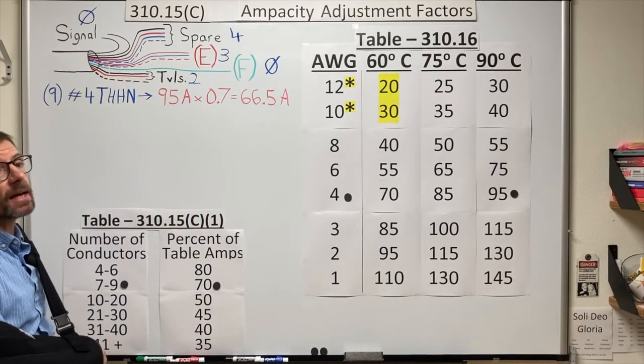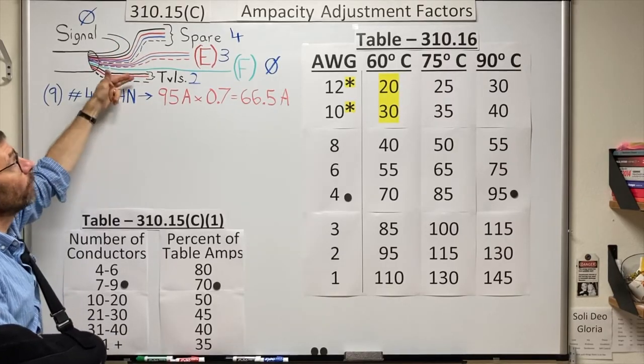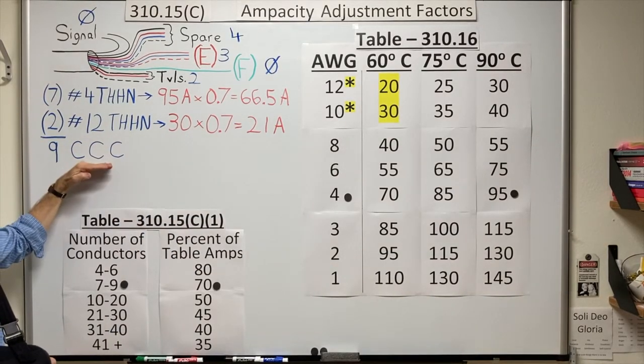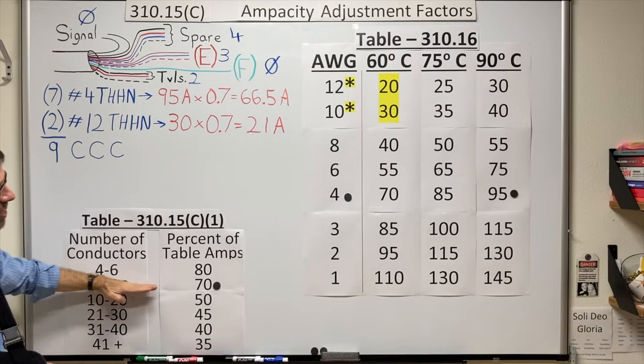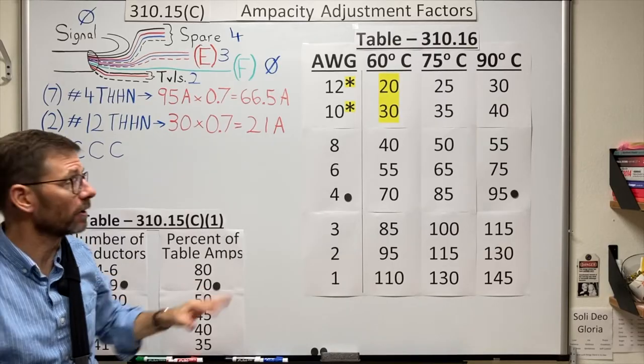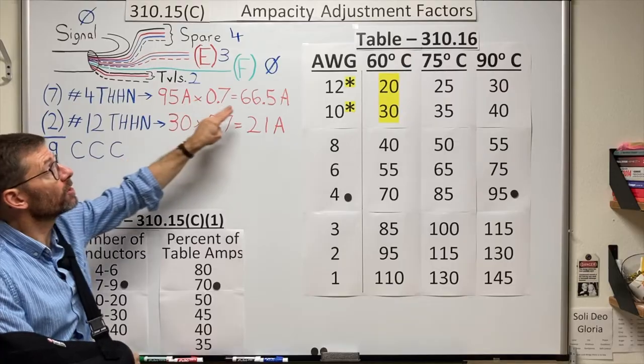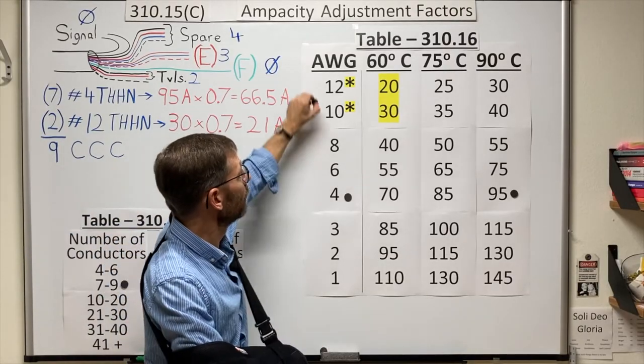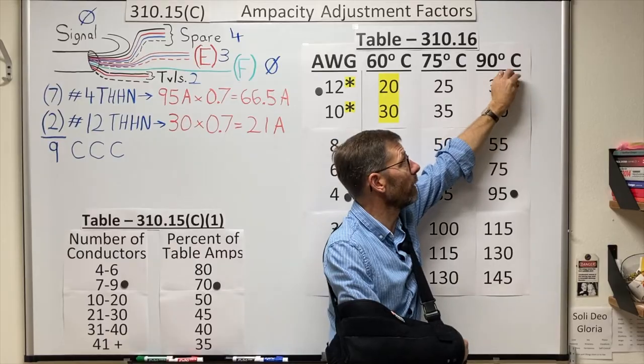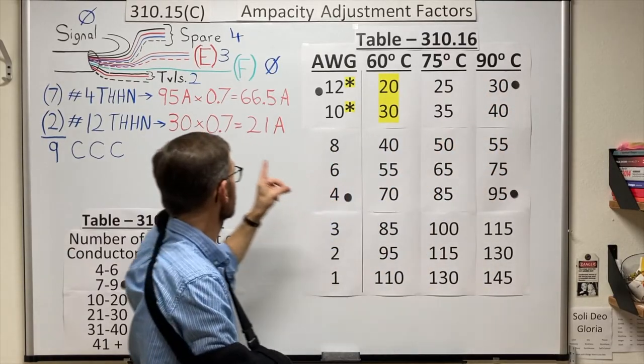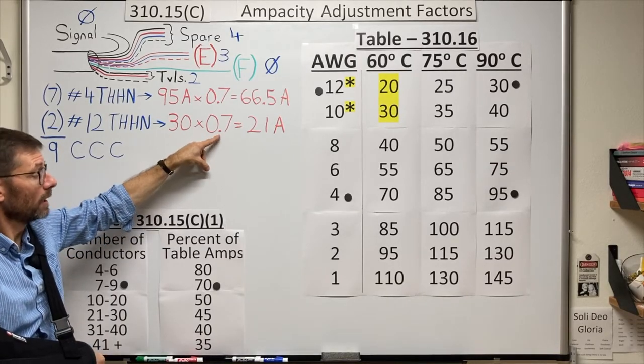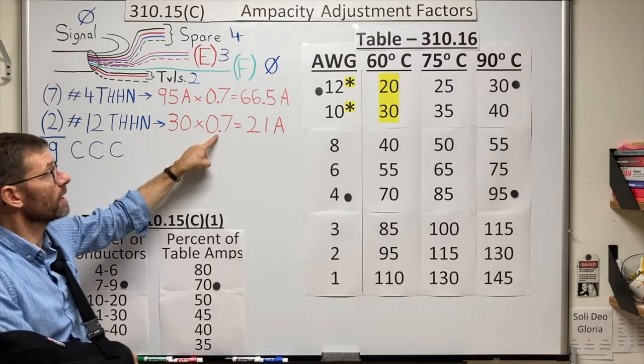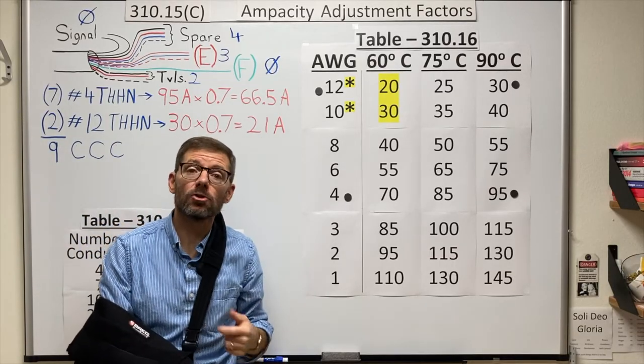But let's say not all the wires were the same size. What if some of them were number fours and some of them were number 12s? We would still have nine current carrying conductors according to our rules, and therefore we would still be limited to 70 percent of any of the conductor's original ampacities. So the number fours would still have a new ampacity of 66.5 amps. And the number 12s, let's double check on our table. The number 12 wires, still THHN, so 90 degree rating, can start their calculation at 30 amps. 30 amps times 0.7, again the factor used for the total number of current carrying conductors. 0.7 is 21 amps. Each of their new ampacities would be 21 amps.